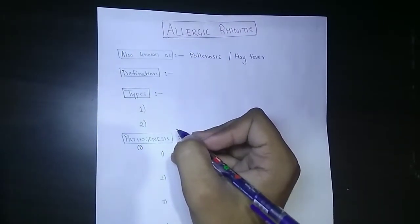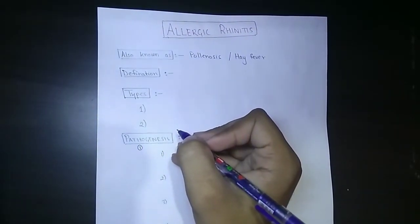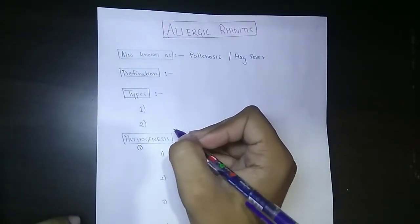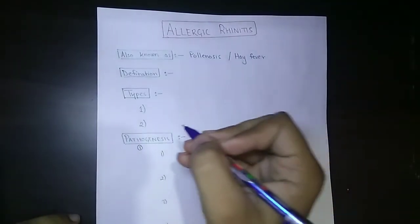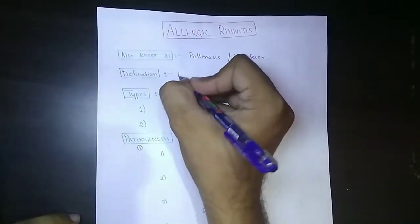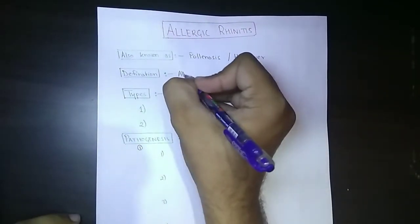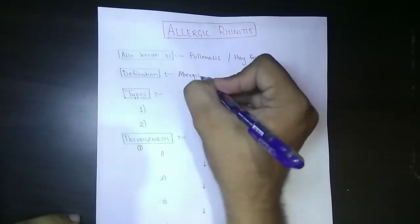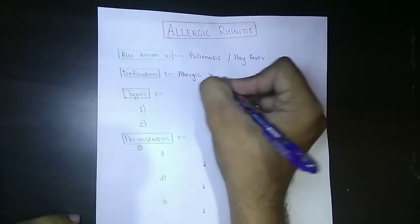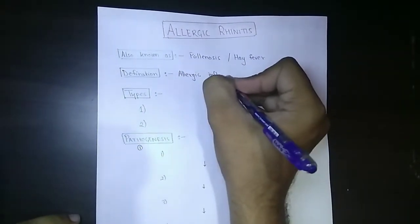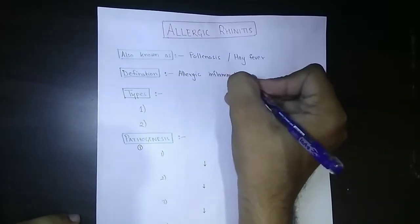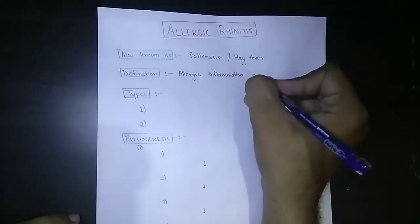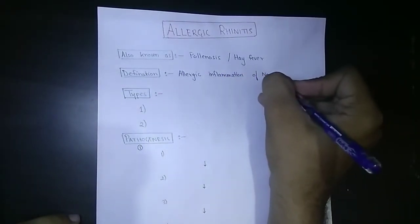Now the definition of allergic rhinitis: allergic rhinitis is defined as allergic inflammation of nasal airways.